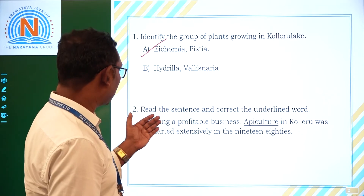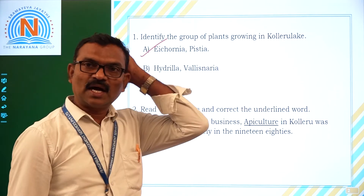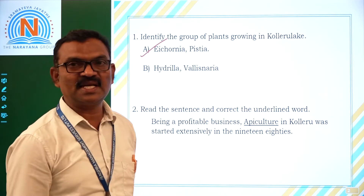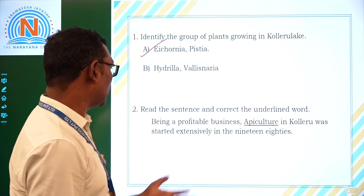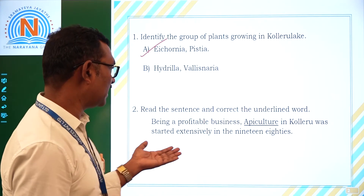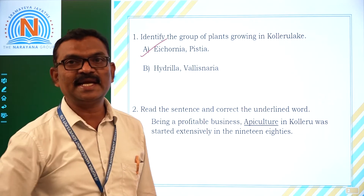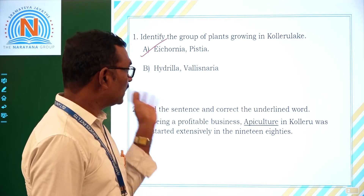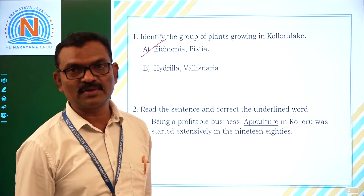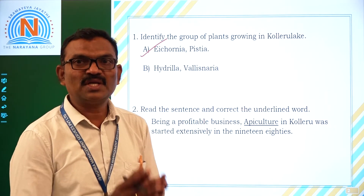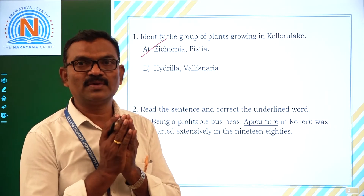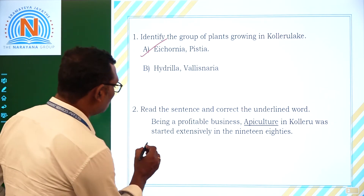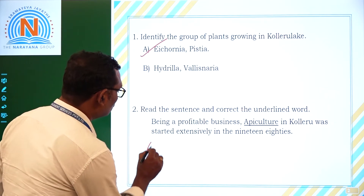Now read the sentence and correct the underlined word. The sentence says: 'Being a profitable business, apiculture in Collier Lake was started extensively in the 1980s.' The correct word is not apiculture — around the surroundings of Collier Lake, it is aquaculture that was grown.